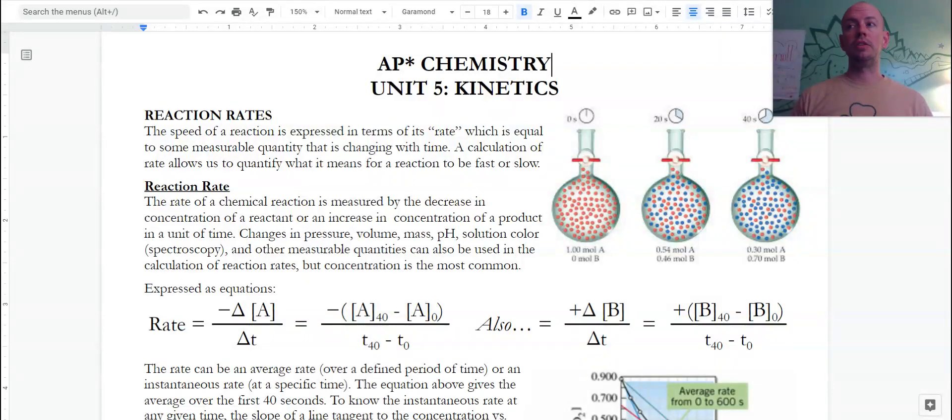You've probably used and done calculations of rates if you've done a physics class, maybe distance versus time, velocity versus time, even acceleration versus time. Or in math classes, even getting all the way up to calculus where you start to look at derivatives and integrals as changes in something in terms of something else. Well here we are focusing on a way to quantify a reaction as being fast or slow.